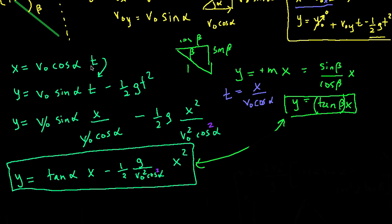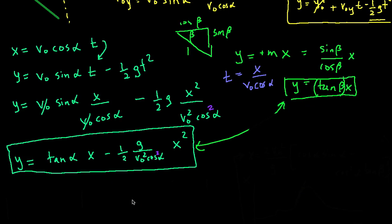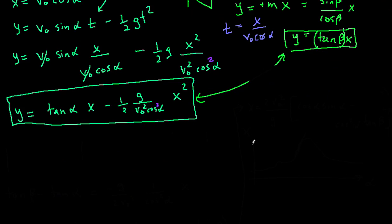And so now in this video we're actually going to solve for where they intersect because that's going to determine, by determining where they intersect we can solve for what is the x range as a function of all these parameters beta and alpha and velocity. So let's do that.